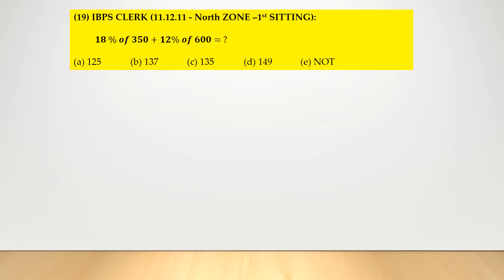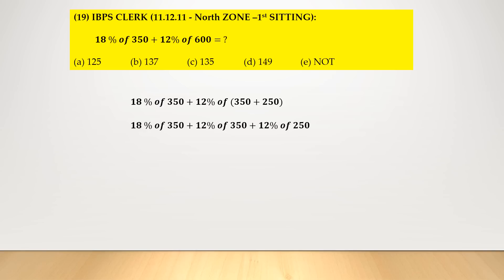Question: 18% of 350 plus 12% of 600. 12% of 600 can be written as 12% of (350 + 250). Taking 350 as common: (18 + 12)% of 350 plus 12% of 250 = 30% of 350 plus 12% of 250. 30% of 350 = 3 × 35 = 105. 12% of 250 = 10% + 2% = 25 + 5 = 30. Final result: 135. Option number C.